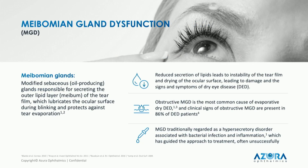Meibomian glands and sebaceous glands come embryonically from the same source. Meibomian gland dysfunction is a disease where you have blocked gland orifices as well as poor lipid quality. At the end of the day, meibomian gland dysfunction is a key contributor to evaporative dry eye, and even in patients with aqueous and inflammatory dry eye, meibomian gland dysfunction is a key underlying comorbidity associated with dry eye disease.